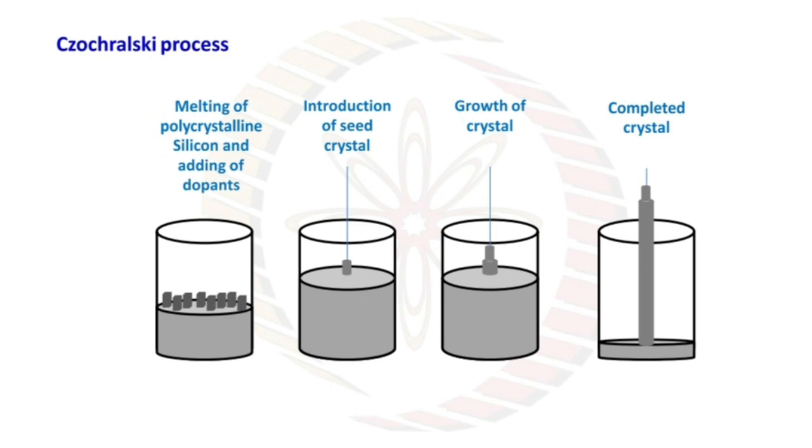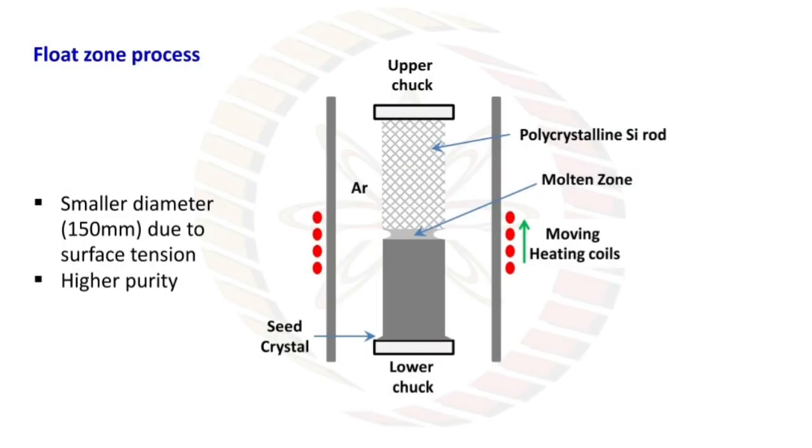In this picture, float zone process is shown. Smaller diameter, 150 mm due to surface tension, and higher purity. Zone refining is shown in this graph.